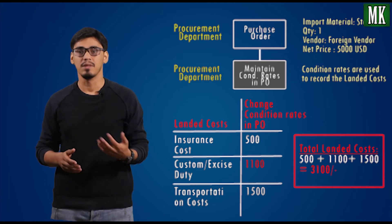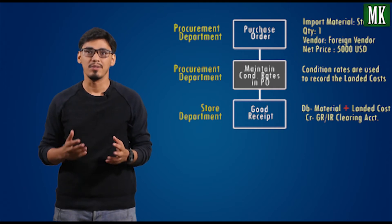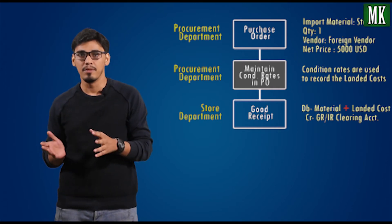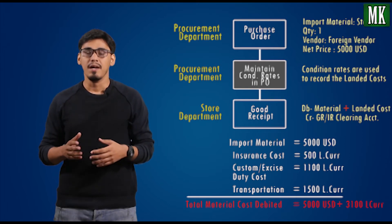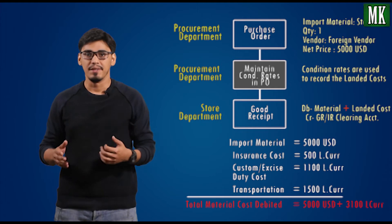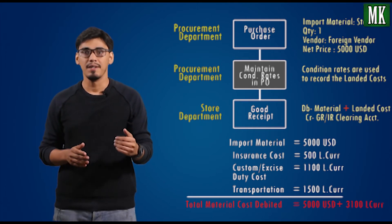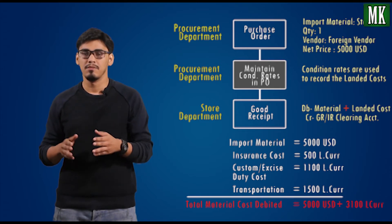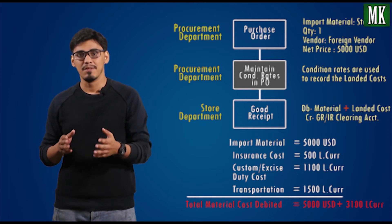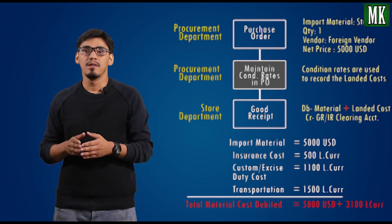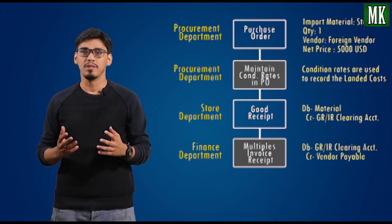The third step is to record the goods receipt against the import material, which is done by the store department. The accounting entry generated here is: debit Material plus Landed Cost, credit GRIR account, with an amount of 5000 USD plus 3100 local rupees, which is the landed cost.